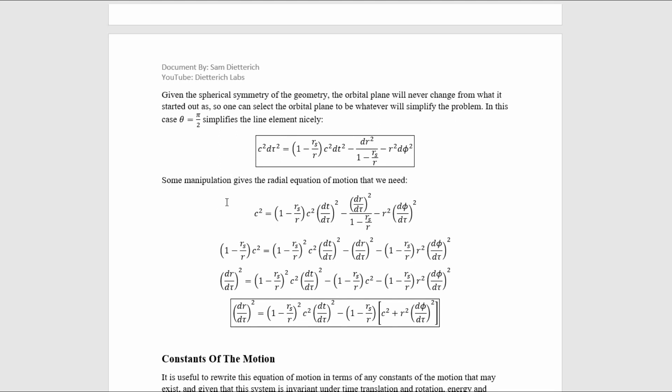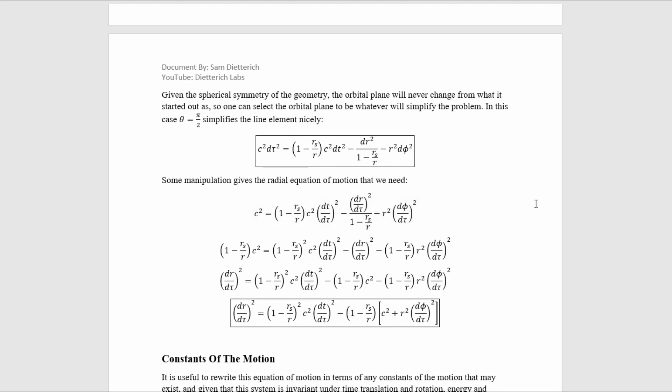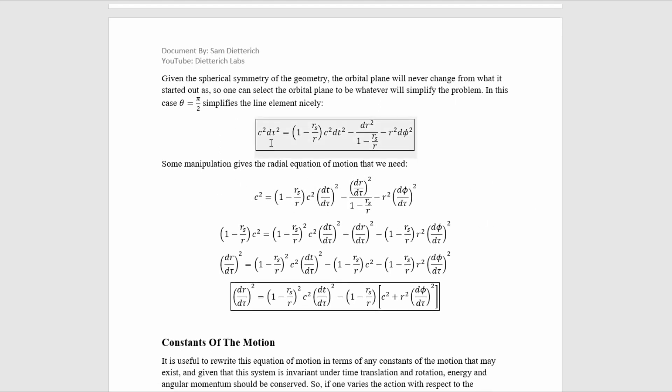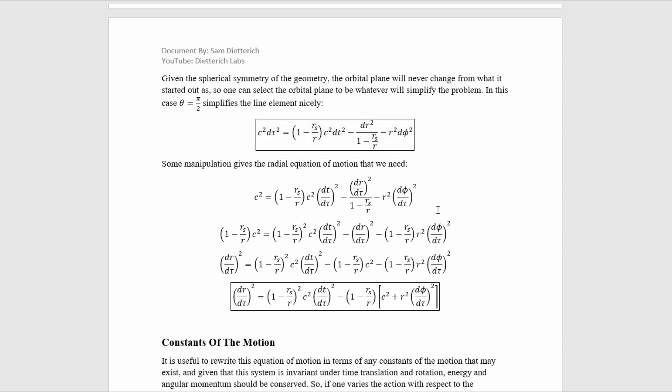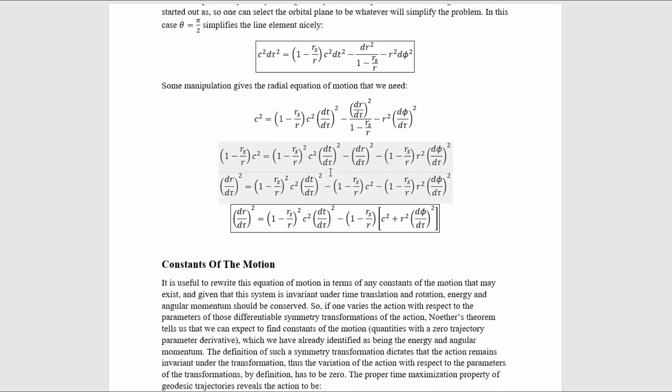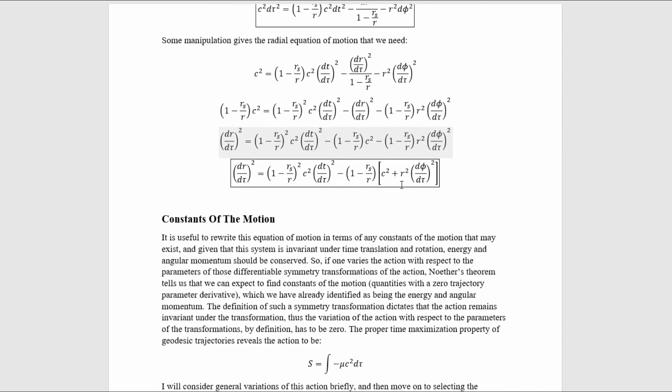Then, we can manipulate this into the radial equation of motion. The first thing I did, and the most critical thing I did, was just dividing by d tau squared, which gives us this. Then I multiplied by 1 minus the Schwarzschild radius over the radius, which got me to this equation. I then added this term here to the other side, and subtracted this one to the other side, which gave me this. And then I did some factoring, which gave me this. This is the radial equation of motion we're interested in.